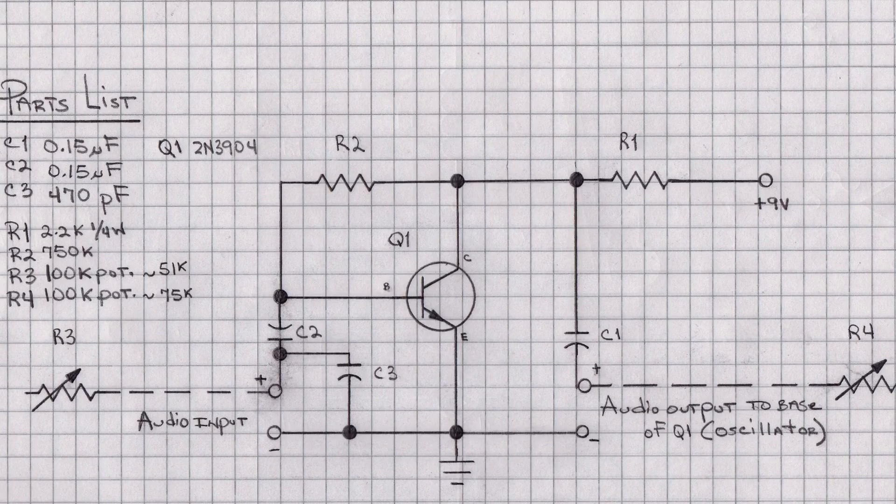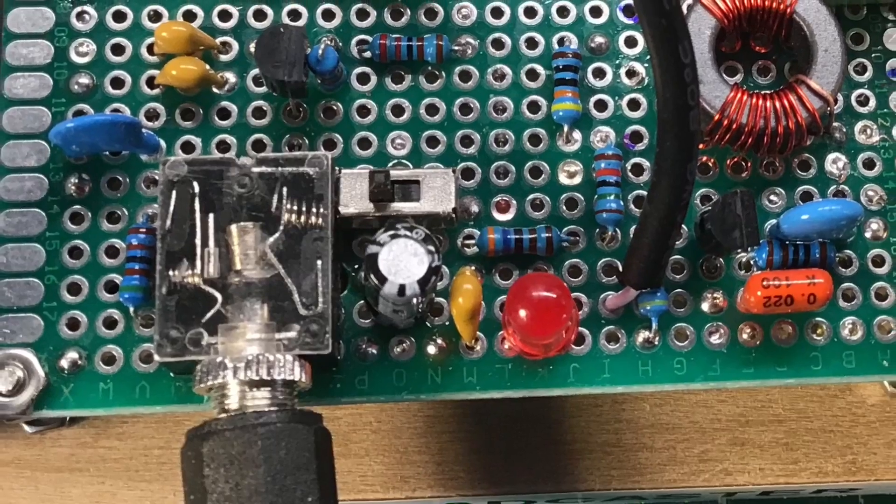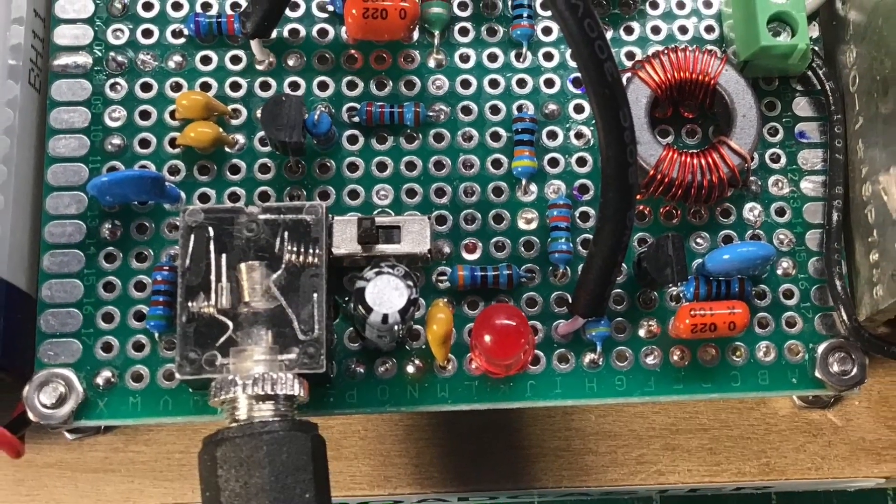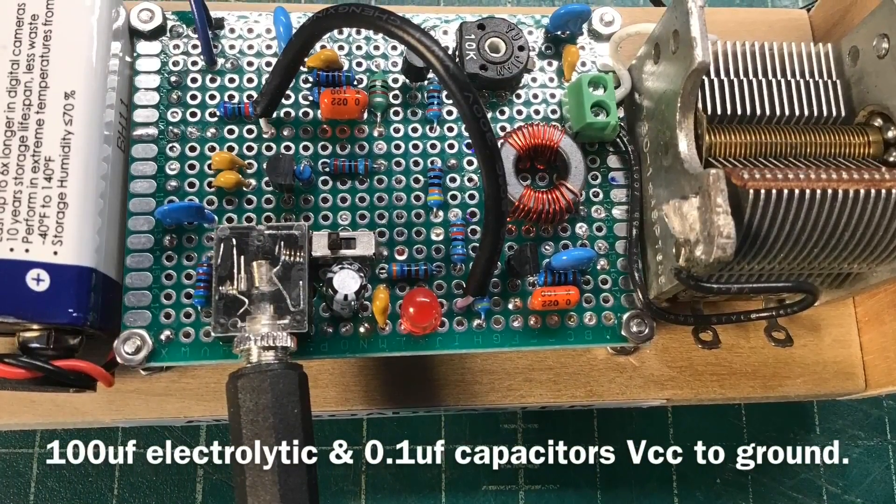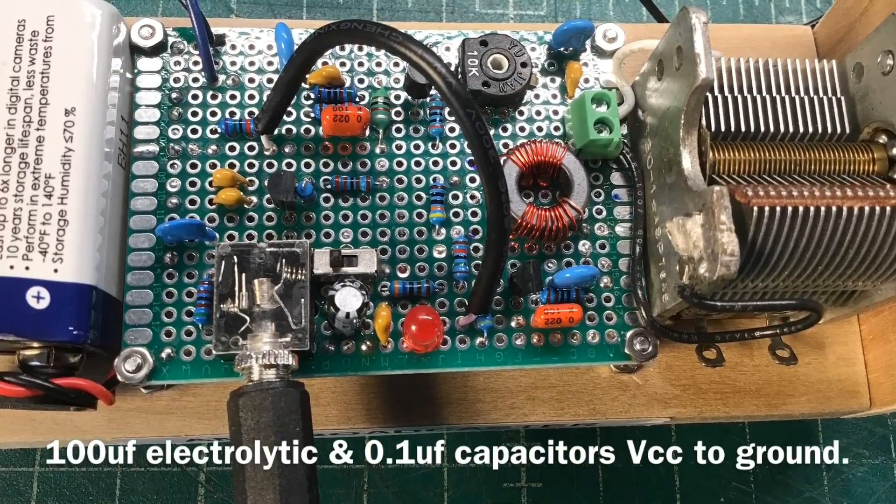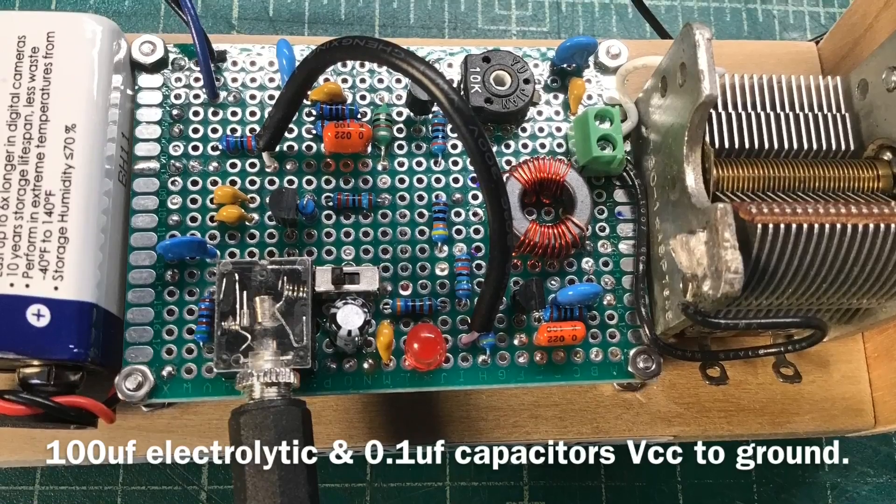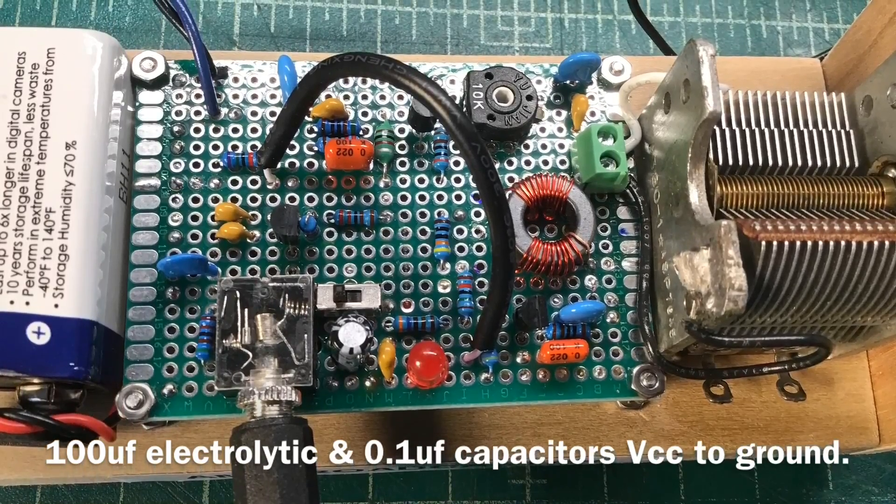Okay, let's take a closer look now at my prototype build. A couple things not called out on the schematic. If you'll look to the right side of my audio input, you'll see the on-off switch, the electrolytic capacitor, another capacitor and an LED and a dropping resistor. That was added after the fact itself.